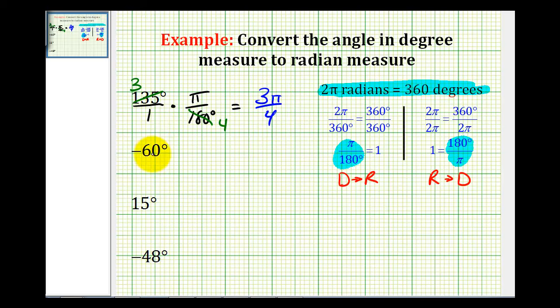And we'll do the rest of these the same way. Put it as a fraction, multiply by pi divided by 180 degrees. Here we have a common factor of 60. There's one 60 in 60. This simplifies to a negative one. There are three 60s in 180. And then again, the degrees simplify out. So we're left with negative one pi divided by three, or just negative pi divided by three radians.